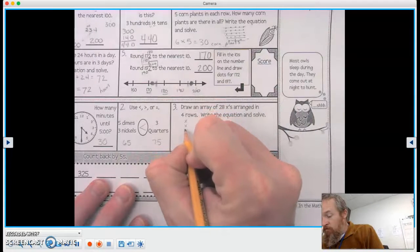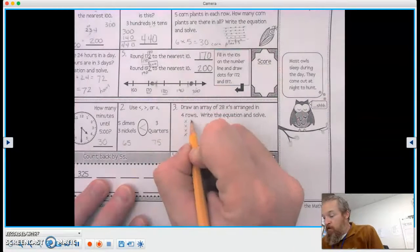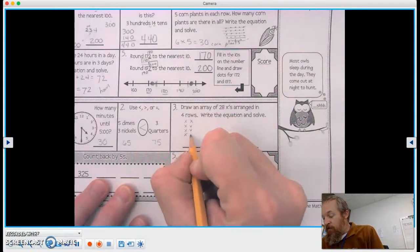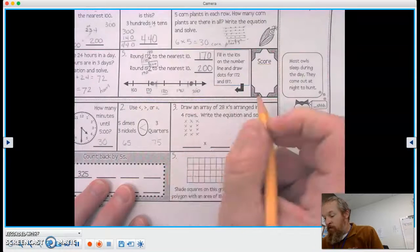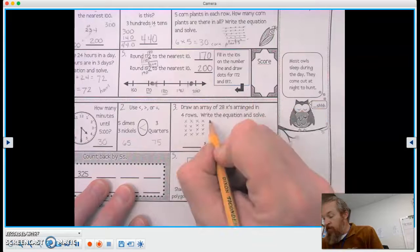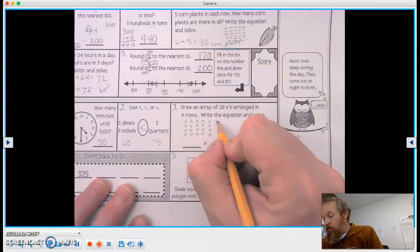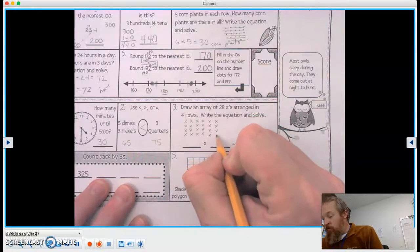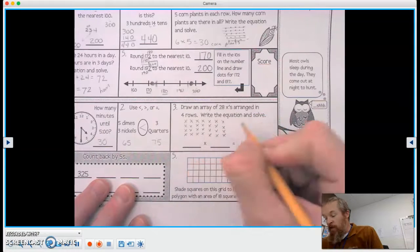1, 2, 3, 4. There's our four rows. And there's 5, 6, 7, 8, 9, 10, 11, 12, 13, 14, 15, 16, 17, 18, 19, 20, 21, 22, 23, 24, 25, 26, 27, 28.